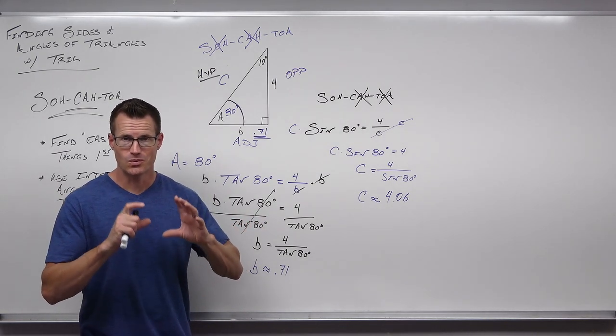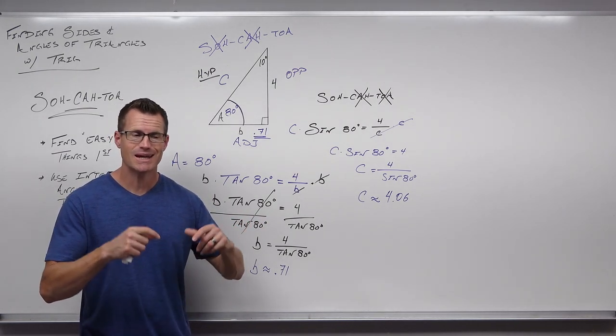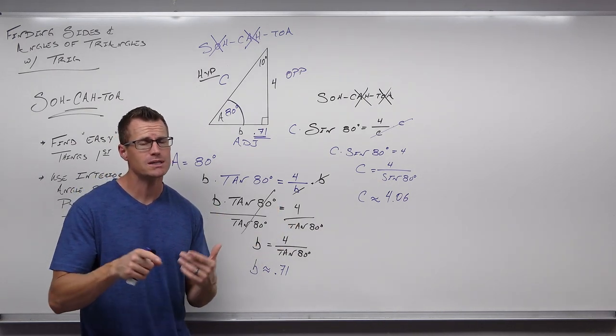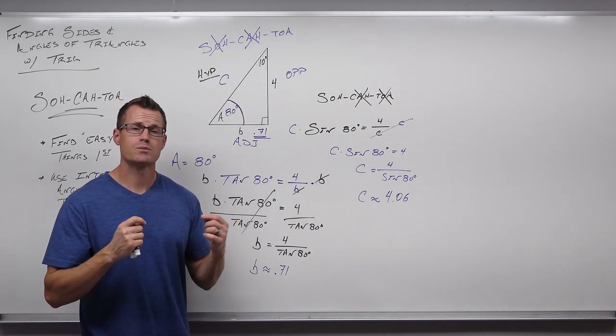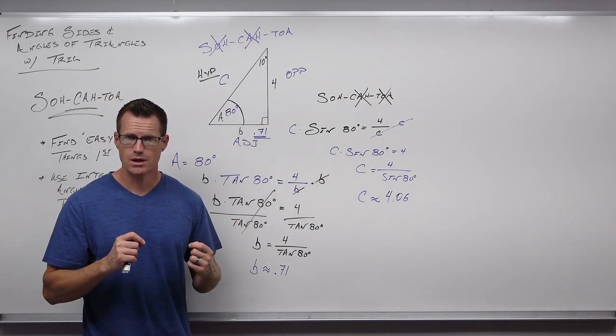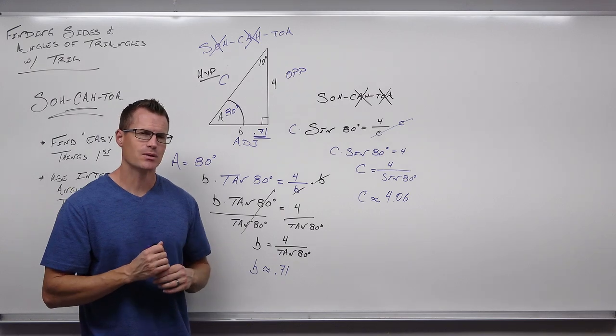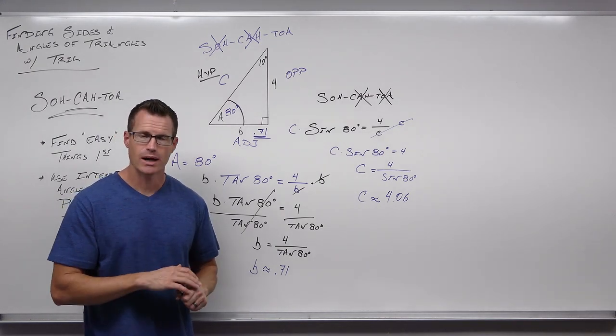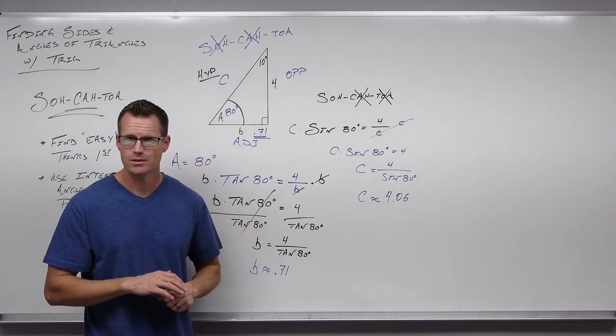I hope you're seeing the process: label the hypotenuse, find the angle, label the sides, determine which trig function to use. Don't use rounded numbers in other math unless you have to. Let's go ahead and do another one.